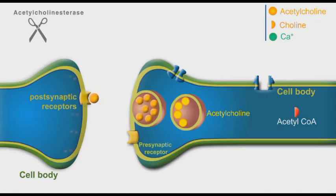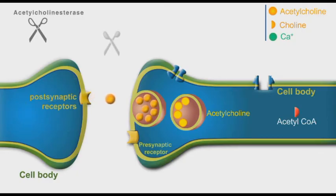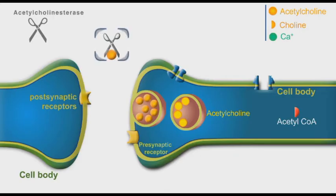The released acetylcholine molecules traverse the synaptic cleft to bind to their post-synaptic receptors and exert their physiological effects. After accomplishing their work, acetylcholine molecules leave their receptors and diffuse through the synaptic cleft, where they are metabolized by acetylcholinesterase enzyme, abbreviated as AChE.